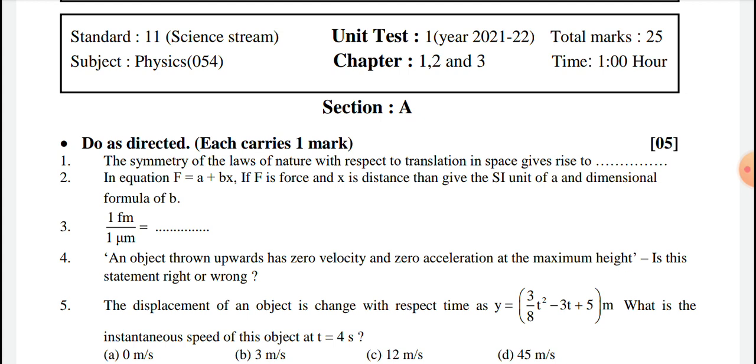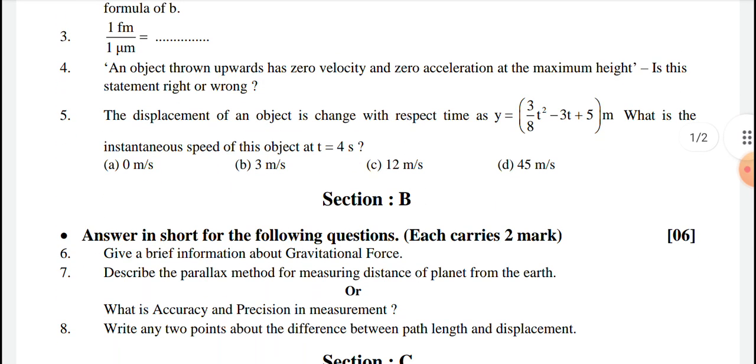The displacement of an object is changed with respect to time as y equals 3/8 t squared minus 3t plus 5. What is the instantaneous speed of this object at t equals 4 seconds? Options: 0 meter per second, 3 meter per second, 12 meter per second, or 45 meter per second.